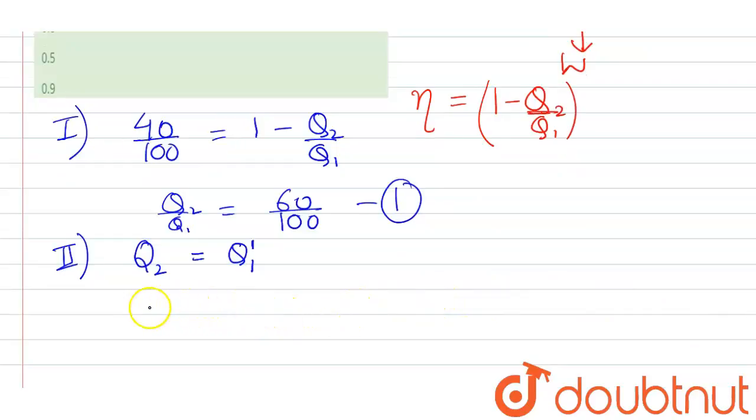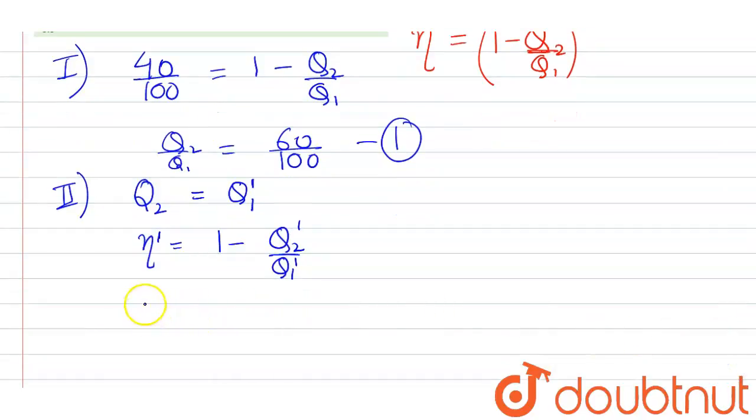And we have to find the final efficiency. Now again applying the formula, efficiency η' will be equal to 1 - Q₂'/Q₁'. So it will be 40/100 = 1 - Q₂'/Q₂.